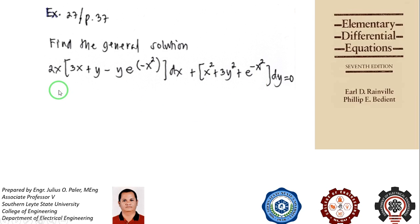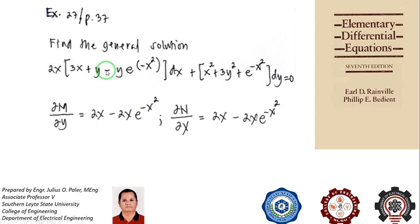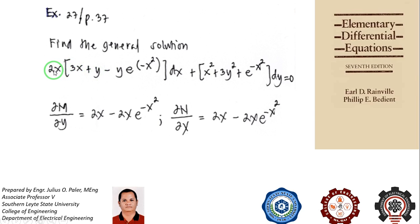The first step is to check whether this is indeed an exact differential equation. This will be our M term and this will be our N term. If you distribute, M is 6x squared plus 2xy minus 2xy e to the negative x squared. Since this is our M term, we differentiate it with respect to y, treating x as constant. The derivative of 6x squared is zero, the derivative of 2xy is 2x, and the derivative of minus 2xy e to the negative x squared is minus 2x e to the negative x squared.